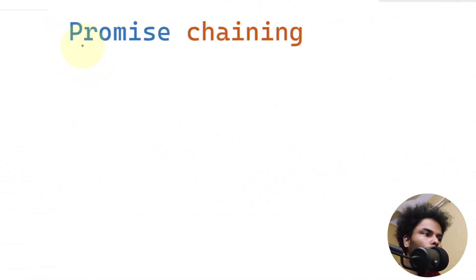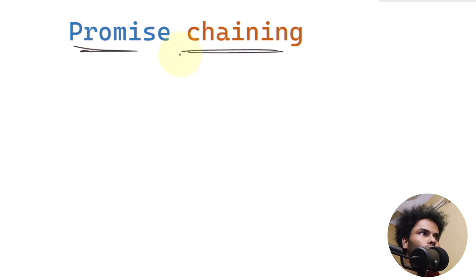In this video we're going to talk about promise chaining in JavaScript. Promise chaining is a technique that is used to handle asynchronous operations sequentially.